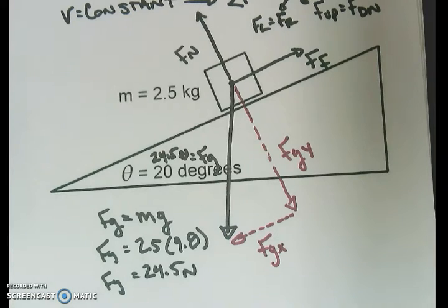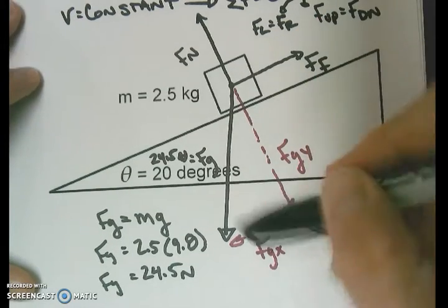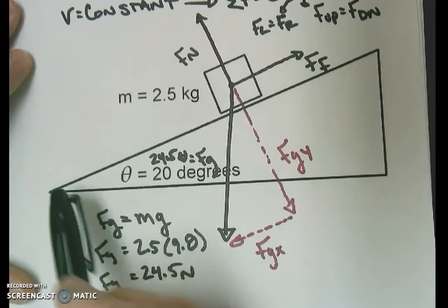This is your force of gravity in the mostly vertical direction, so we're going to call that force of gravity in the y direction. And then we also have a force of gravity pulling it down the ramp from right to left. We're going to call that force of gravity in the x direction.